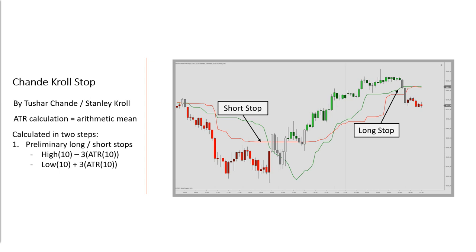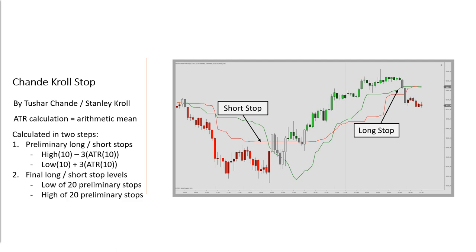But these preliminary stops have no resets — they continue regardless of whether the market is in an uptrend or downtrend. So in a second step, the eventual long and short stop levels are found using the preliminary stops: you locate the lowest of the last 20 preliminary stops for the long stop, and the highest of the last 20 preliminary stops for the short stop. That is the calculation itself.